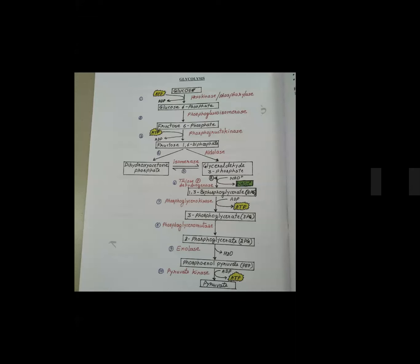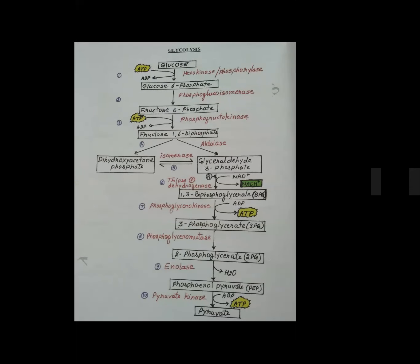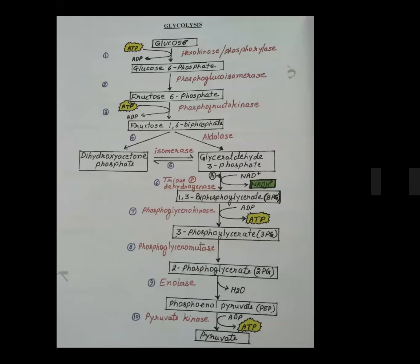In the last period we studied glycolysis. Now we are going to study the steps of aerobic respiration. In the first step of aerobic respiration — which I told you about in the last period — that is glycolysis, in which glucose becomes pyruvate.